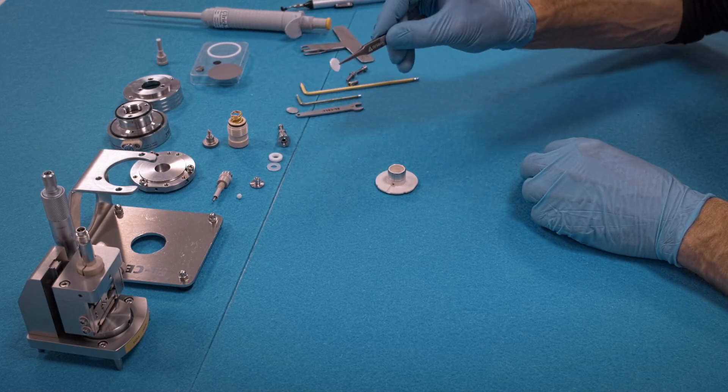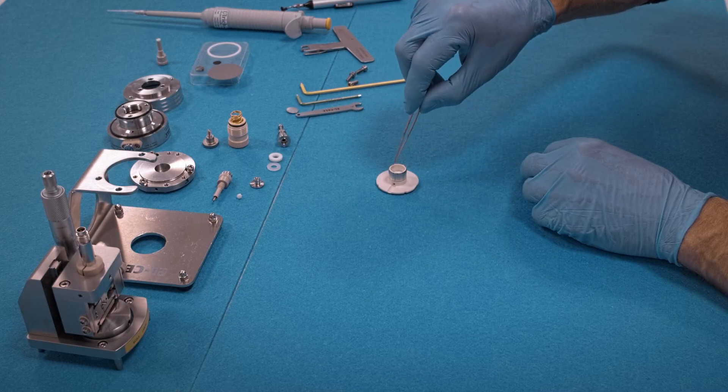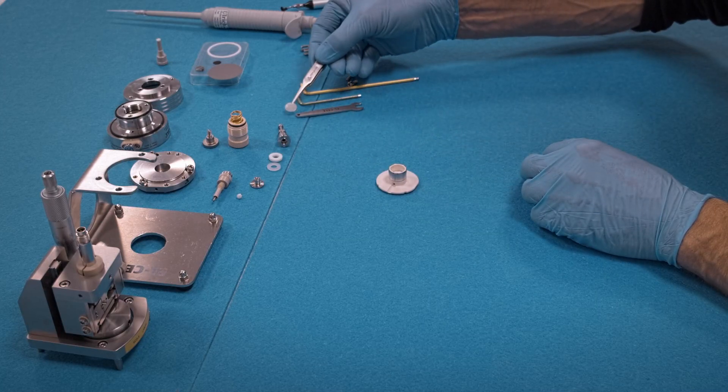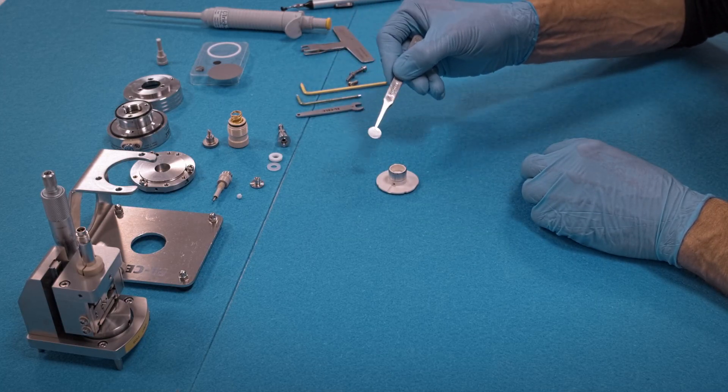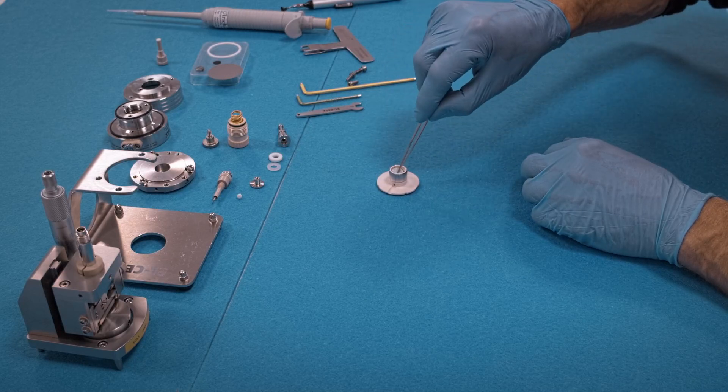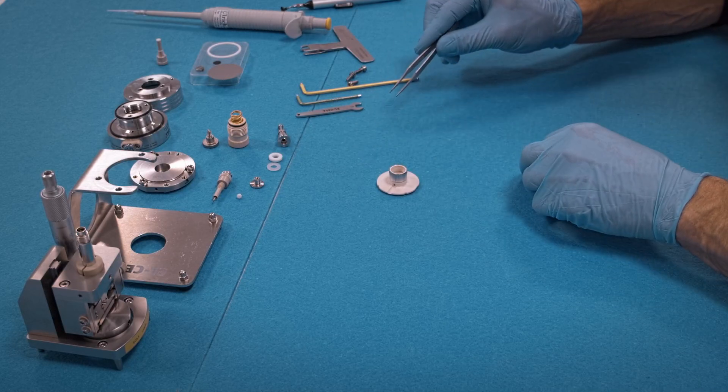Insert the glass fiber separator, 12 mm in diameter, 0.25 mm thick. Then insert the lithium metal counter electrode, again 12 mm diameter, 0.2 mm thick.